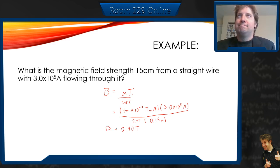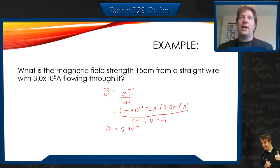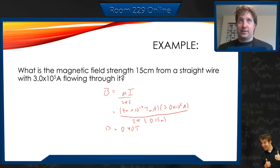Even that much current on one wire doesn't generate that much of a field. That's why we wrap them all up into hundreds and thousands and tens of thousands of turns to generate a solenoid — we add up all that current. One wire doesn't actually end up generating that much magnetic field. Remember, one tesla is a lot. If you look at an NMR machine with those huge magnets, that's at maximum something like 3 teslas. So 0.4 teslas is a substantial amount, but to generate it we need an incredible amount of current.